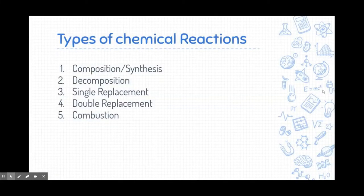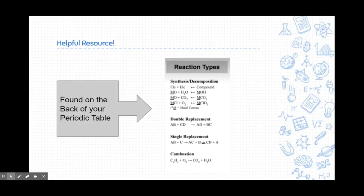We're going to explore these five types of chemical reactions. The first one is called a composition reaction, also known as a synthesis reaction in many textbooks and online. Decomposition reactions, single replacement reactions, double replacement reactions, and combustion reactions. I recommend pulling out your periodic table and looking at the back of it. You're going to see these different reaction types there, and this will be really useful. You don't need to memorize them — they're on the back of your periodic table. You just need to know how to use them.